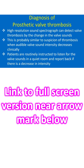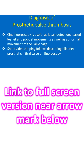Diagnosis of prosthetic valve thrombosis: High resolution sound spectrography can detect valve thrombosis by the change in valve sounds, similar to the clinical suspicion when audible valve sound intensity decreases. Patients are routinely instructed to listen for valve sounds in a quiet room and report back if there is a decrease in intensity. Cinefluoroscopy is useful as it can detect decreased leaflet and poppet movement as well as abnormal movement of the valve cage.